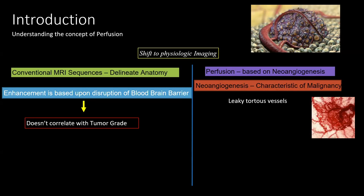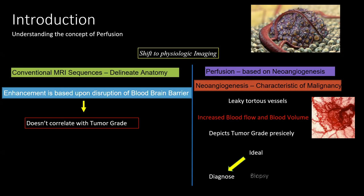As we all know, the basic feature of any malignancy — and specifically high-grade malignancy — is neoangiogenesis, meaning formation of new leaky tortuous vessels. With these fragile vessels, the tumor bed always has very high blood flow and blood volume. With perfusion techniques, what we are assessing is the grade of neoangiogenesis, which correlates well with tumor grade itself. Therefore, perfusion is a better way to grade brain tumors as well as to guide biopsy and avoid sampling bias.